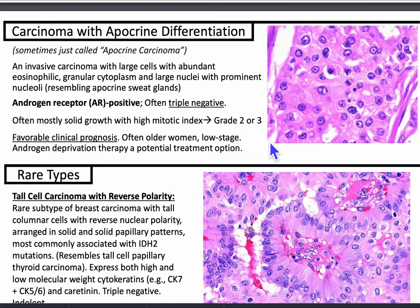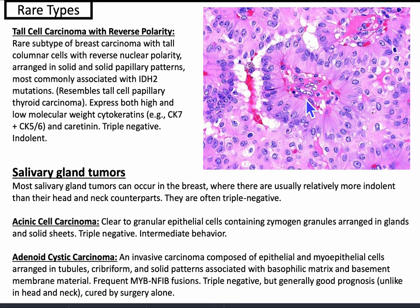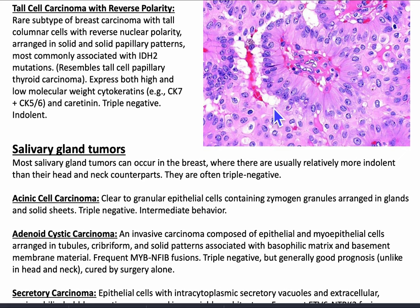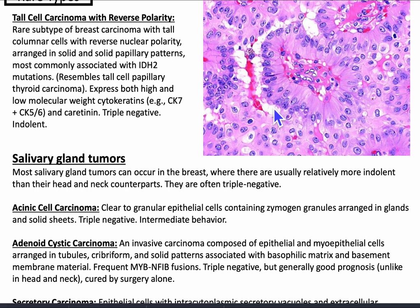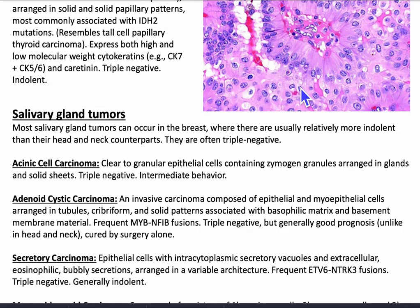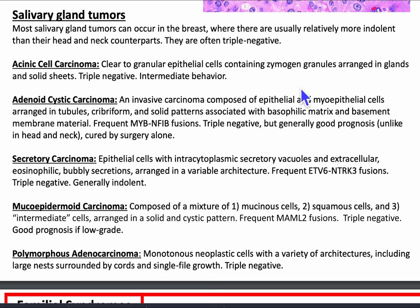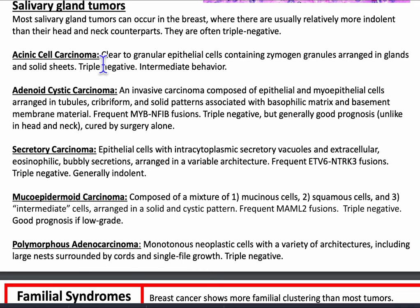Now let's talk about rare types of breast cancer. Tall cell carcinoma with reverse polarity is characterized by tall columnar cells with reverse nuclear polarity arranged in solid and solid papillary patterns, most commonly associated with IDH2 mutations. It reminds you of tall cell papillary thyroid carcinoma and expresses both high and low molecular weight cytokeratins including CK7, CK5/6, and calretinin. It is triple negative and indolent. Most salivary gland tumors can occur in the breast, where they are usually relatively more indolent than their head and neck counterparts and often triple negative. Acinic cell carcinoma has clear to granular epithelial cells containing zymogen granules arranged in glands and solid sheets — triple negative with intermediate behavior.